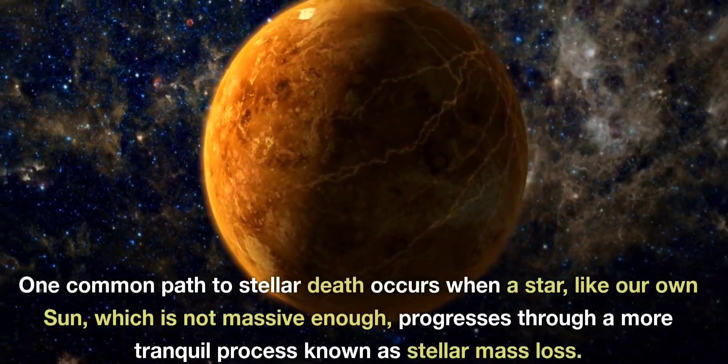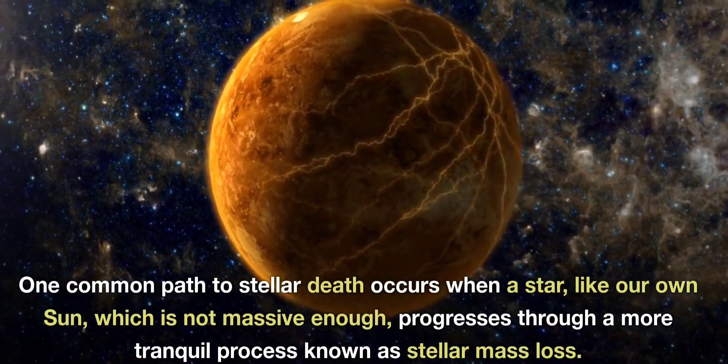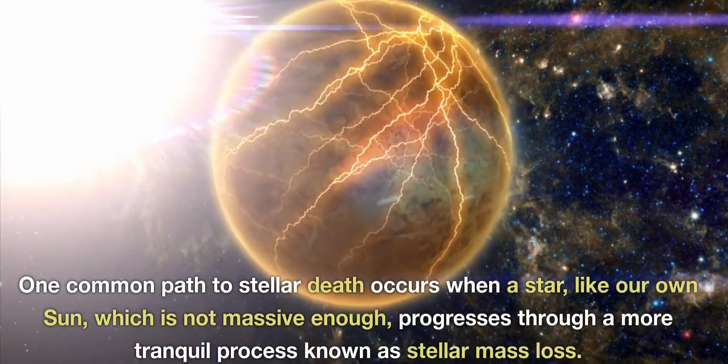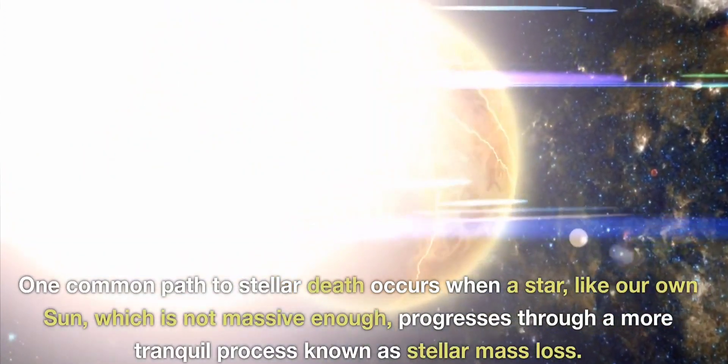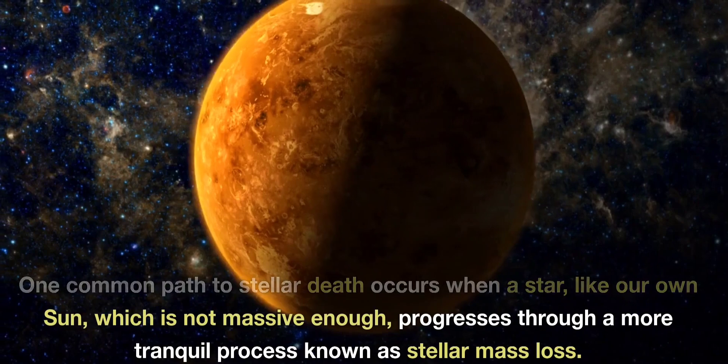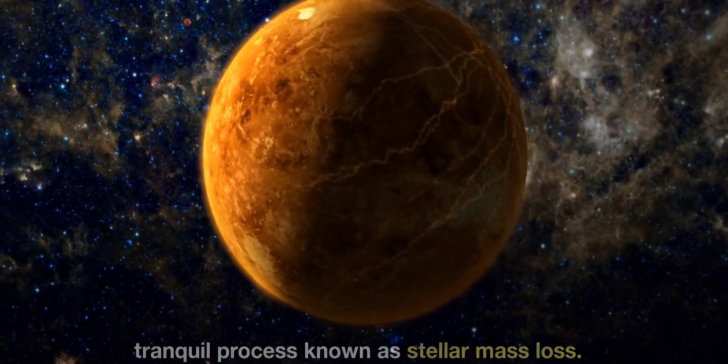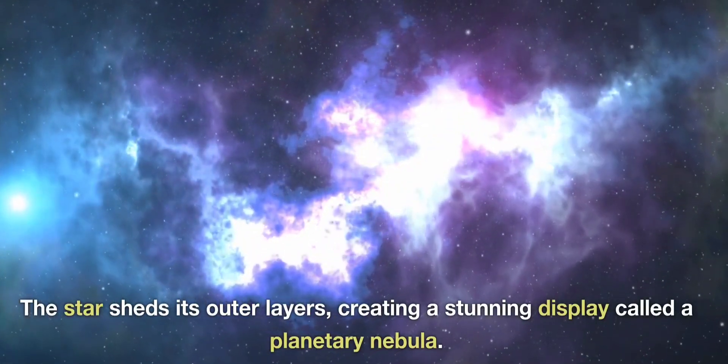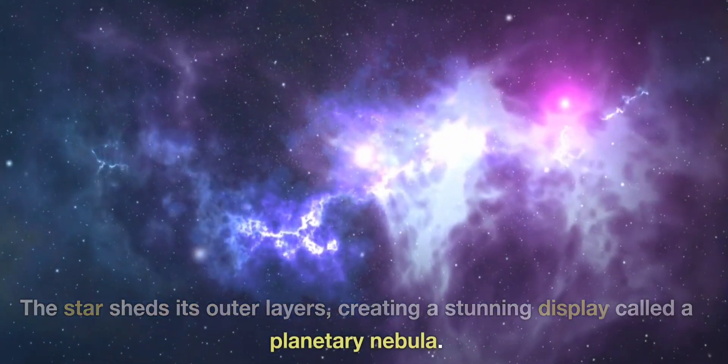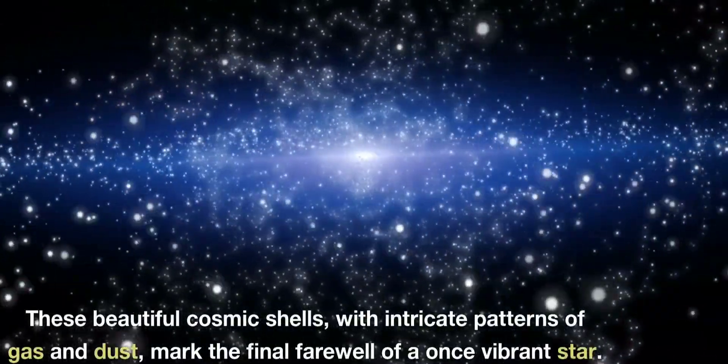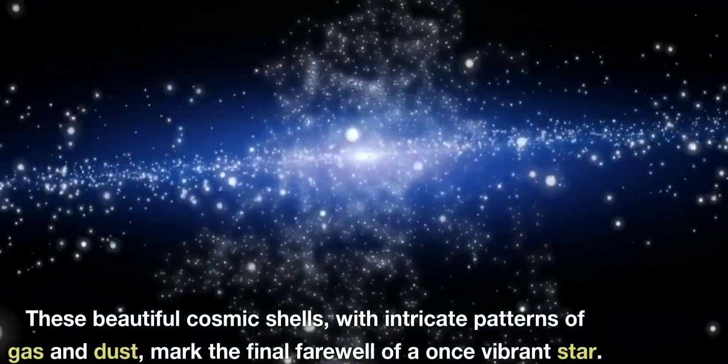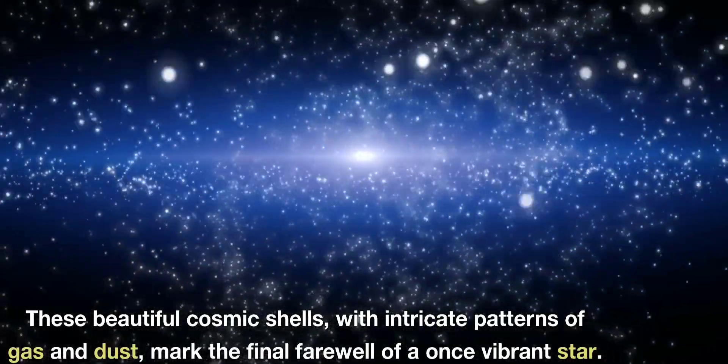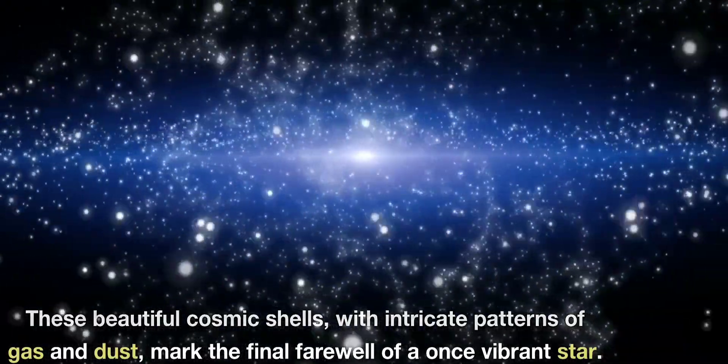One common path, the stellar death, occurs when a star like our own Sun, which is not massive enough, progresses through a more tranquil process known as stellar mass loss. In this process, the star sheds its outer layers creating a stunning display called a planetary nebula. These beautiful cosmic shells with intricate patterns of gas and dust mark the final farewell of a once vibrant star.